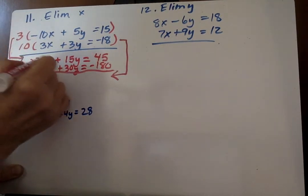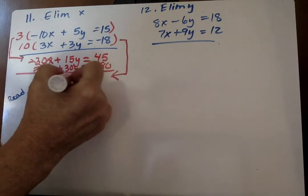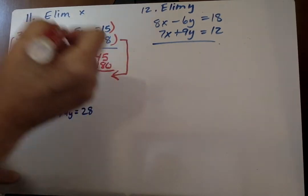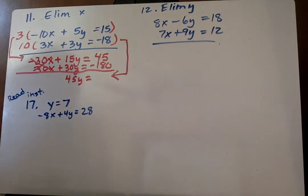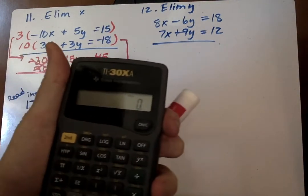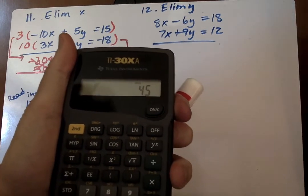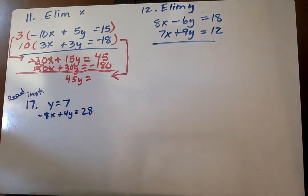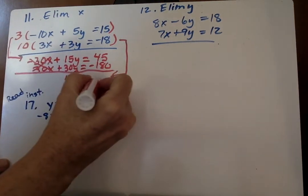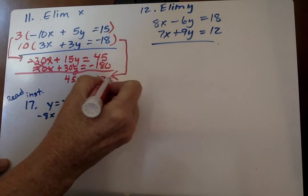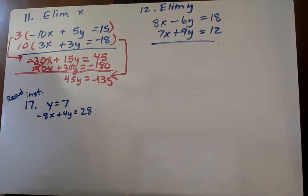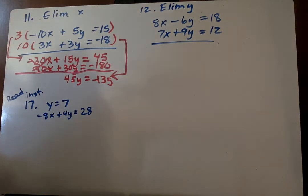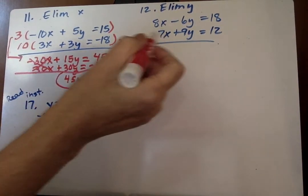So now I've eliminated my x. I bring these down and I get 45y equals, and I don't know what 45 minus 180 is, but let's see. Take our handy dandy calculator: 45 minus 180 is negative 135. So again, we don't have to finish solving this. We can just leave it right there.